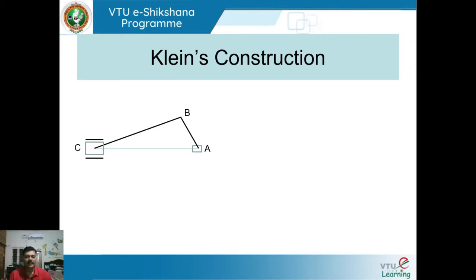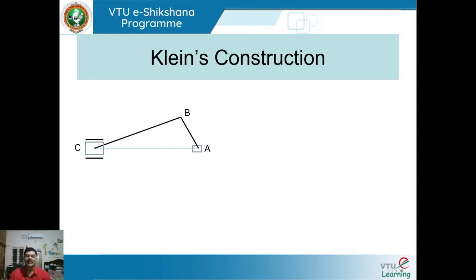There is a connecting rod CB connected to the crank. At the end of the connecting rod, there is a slider attached. When AB rotates, the connecting rod also moves, causing the slider to have a horizontal motion. Now, let us see what Klein's construction is and how to construct velocity and acceleration diagrams using this method.